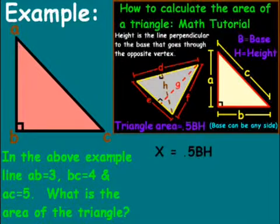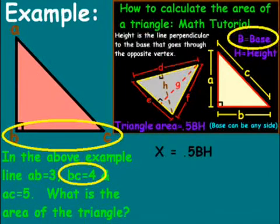Now, I'm going to take the simplest route here. And I'm going to use BC as our base. So we're going to use BC equals 4. That's going to be our base.